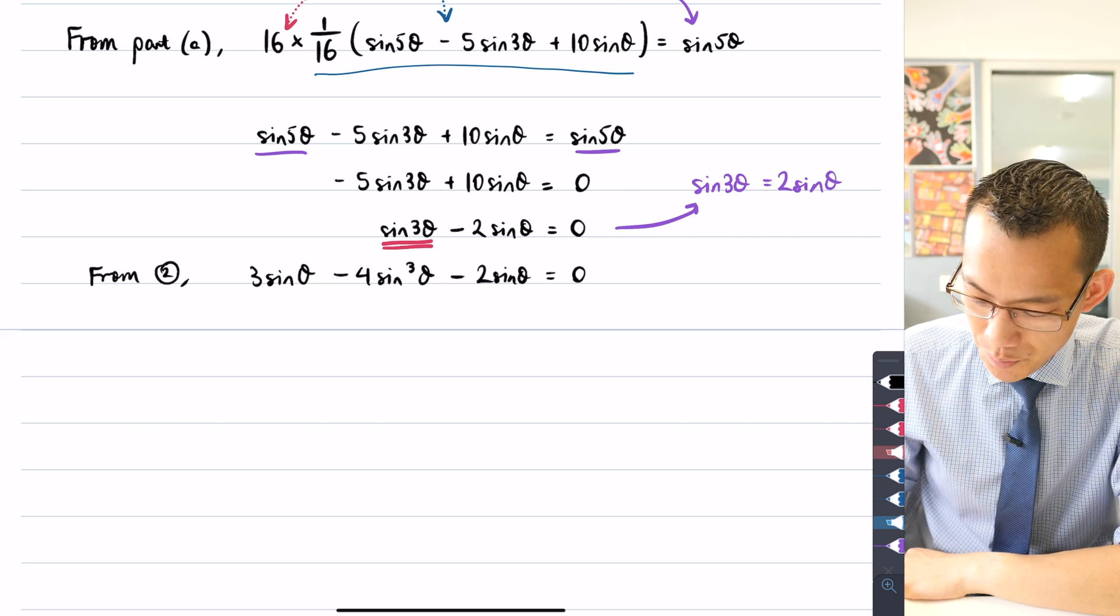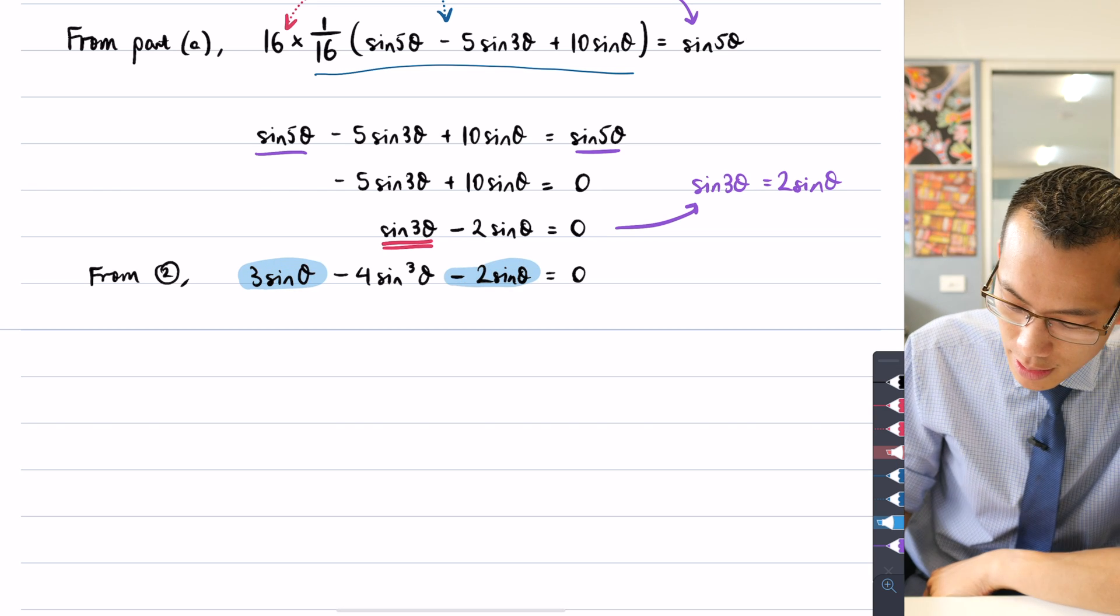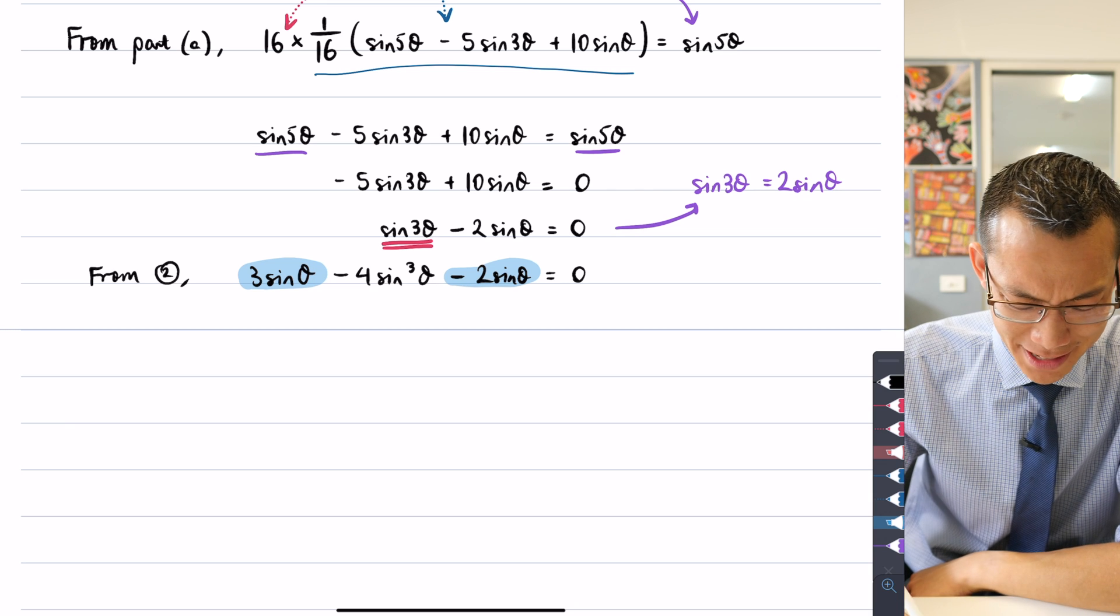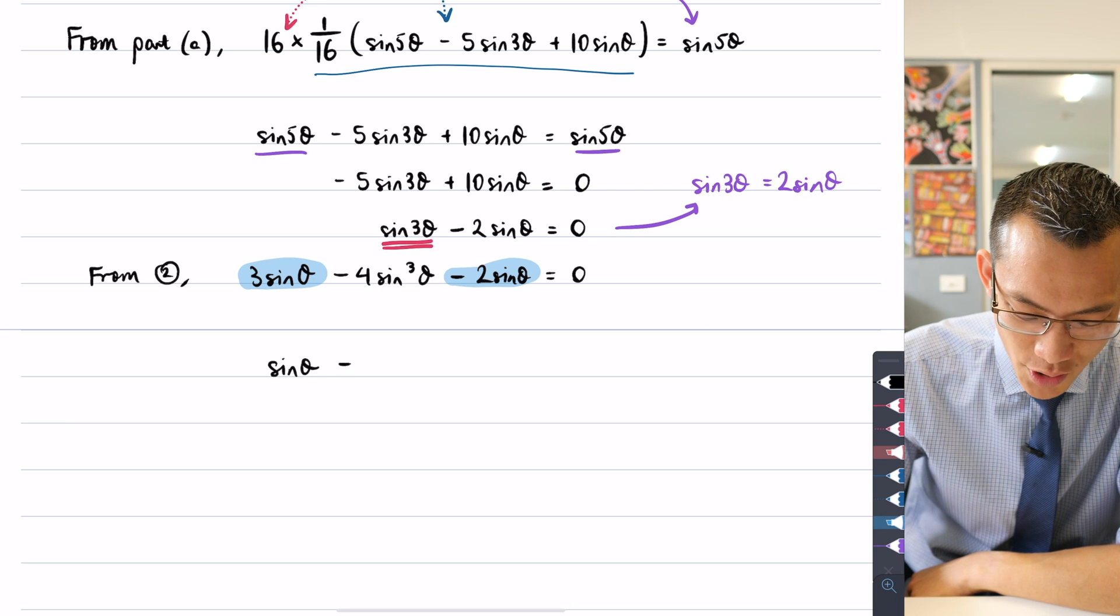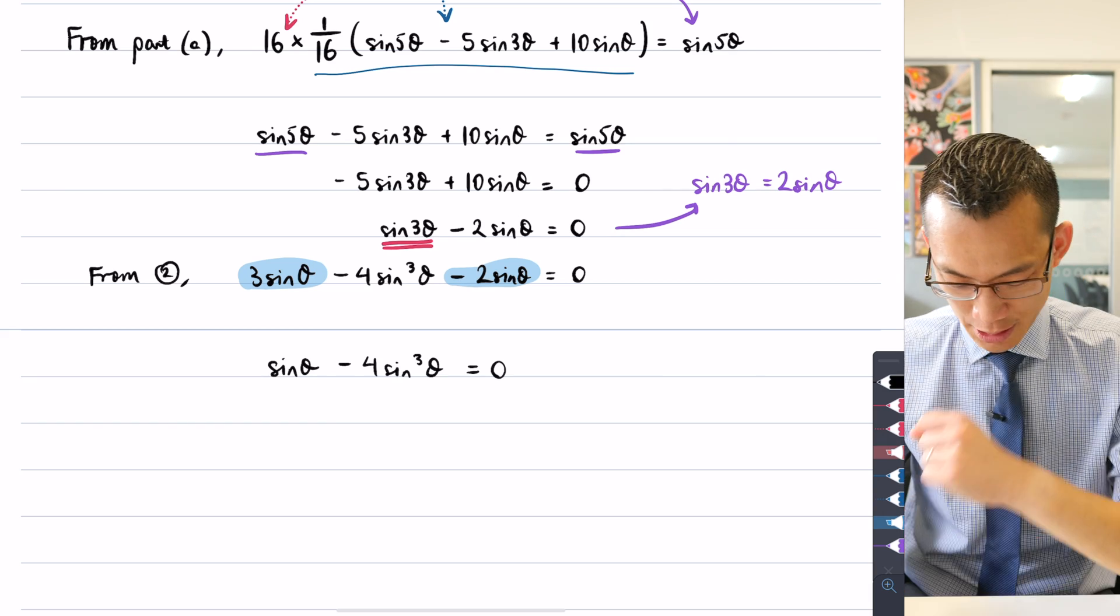So let's have a go. I've got these like terms that you can see here that are sinθ and another sinθ there. There's 3 take away 2 which is just 1. And then you've got minus 4 sin³θ. That's all equal to 0.